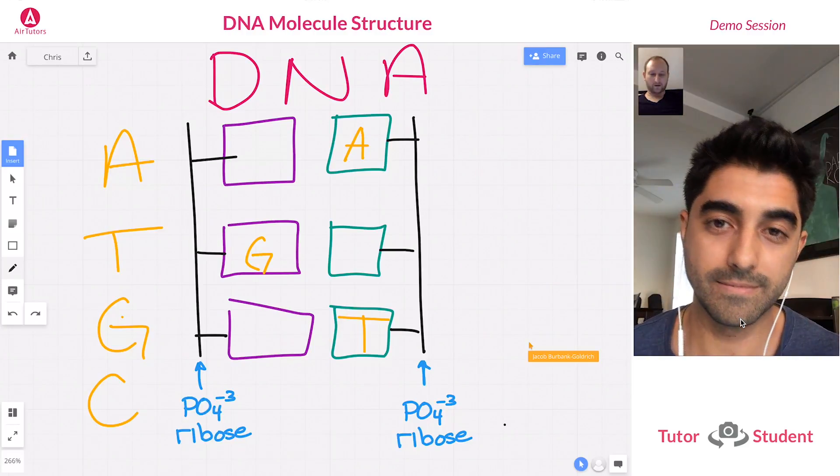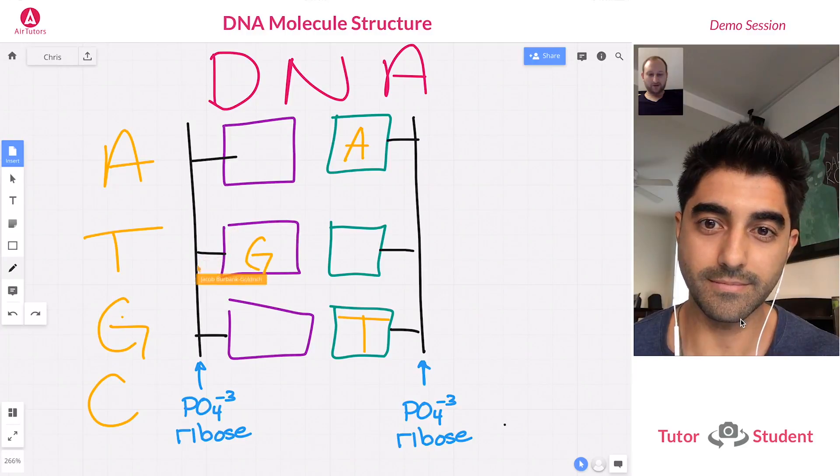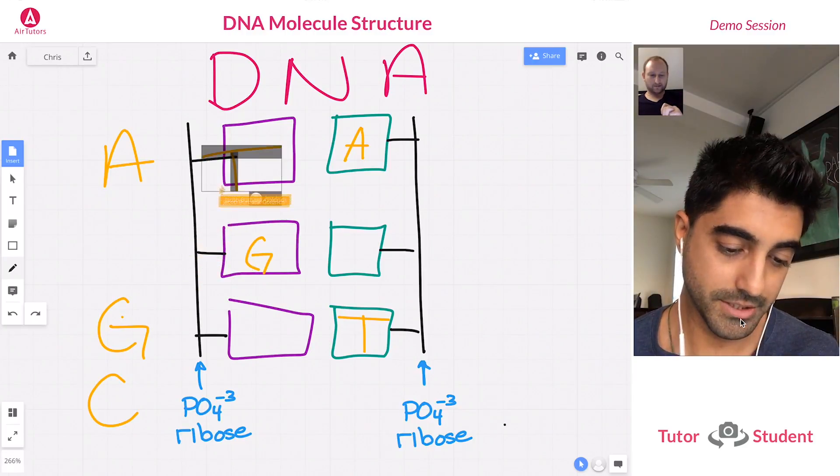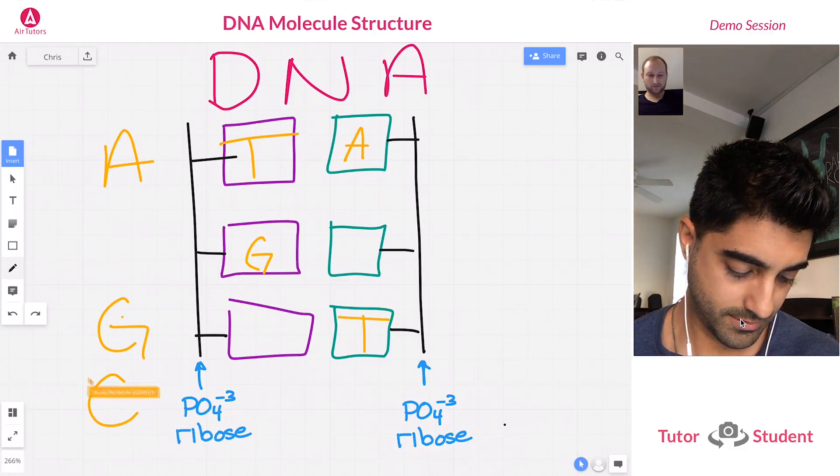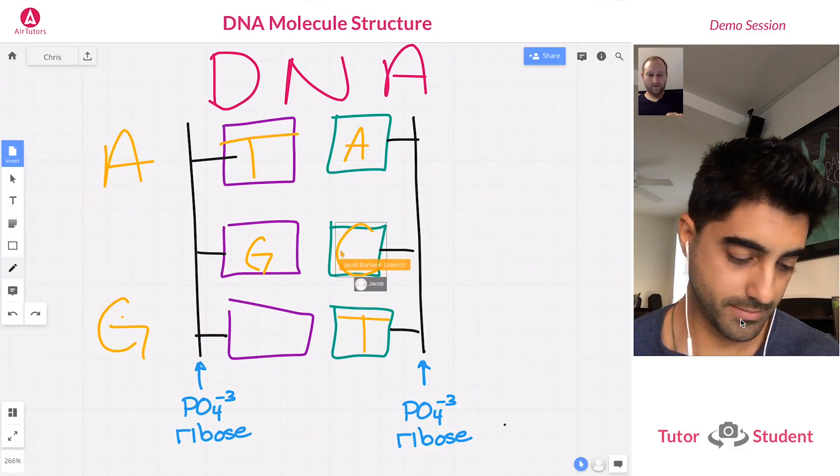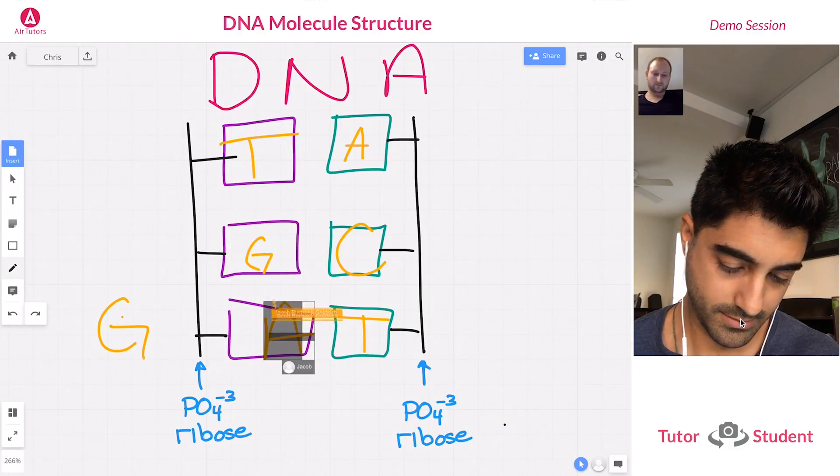Okay, all right. So from what I recall, A should pair with T. Good job. G should pair with C, so this would come right up there. And then T should pair back to A, like so. Yeah.